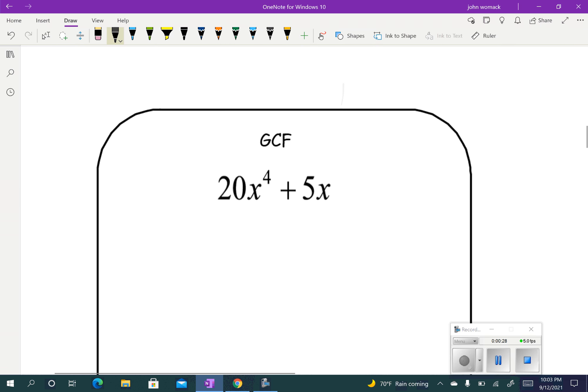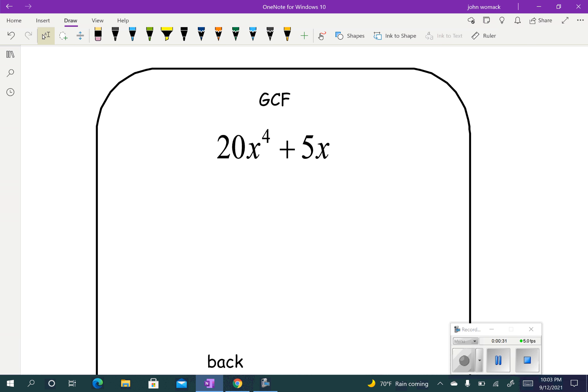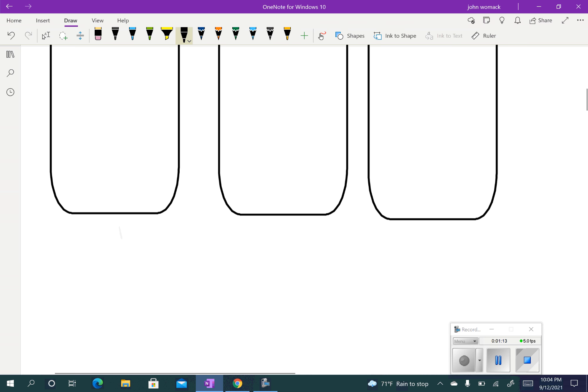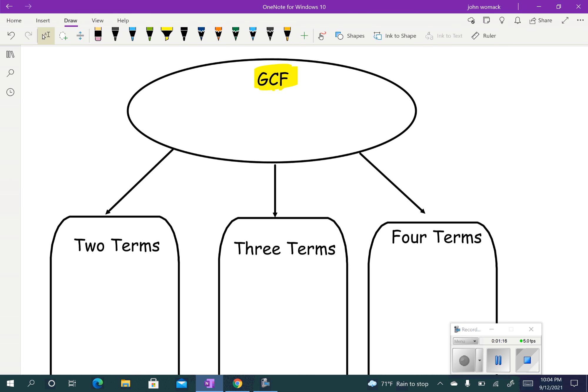The very first thing we should always do is look for a greatest common factor, GCF. So here's an example. An example of a greatest common factor would be 20x to the fourth plus 5x. So the common factor on this one would be 5x. The 5x goes out in front, and then we put what's left. So no matter what, it doesn't matter how many terms it has, if you're asked to factor, you're always going to do a greatest common factor first.